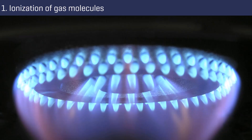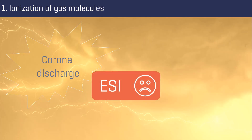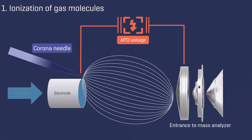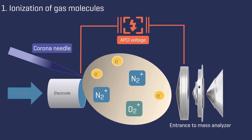We will now examine the ionization process in APCI step by step. The first step is the ionization of gas molecules and involves a corona discharge. While a corona discharge should be avoided when performing ESI, this phenomenon is an essential part of the APCI process. A field strength is applied to the tip of a corona needle, which separates electrons from the surrounding gas molecules in the ion source, and a gas plasma is formed containing ionized nitrogen and oxygen ions.